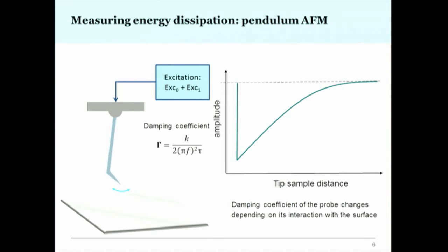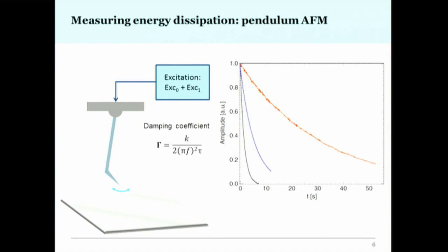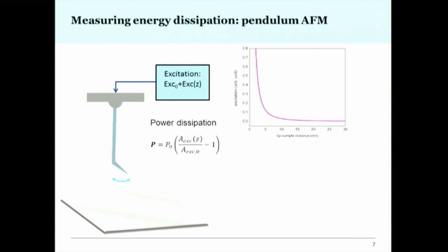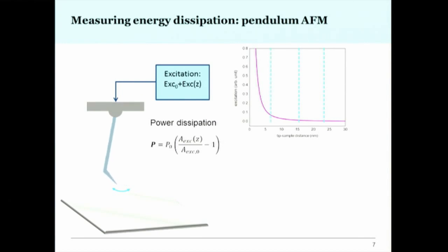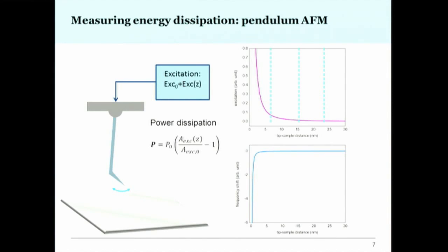By measuring how much energy is needed to maintain constant amplitude as we approach the surface, we can determine where that energy is being lost. We can kick the cantilever, measure how long it takes to damp, go closer and repeat — but that is slow. Instead, we use a feedback loop to continuously keep the amplitude constant, measure power dissipation from the excitation amplitude, and simultaneously get frequency shift data. Frequency shift gives information about forces; excitation gives information about dissipative interactions.